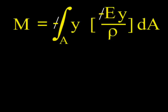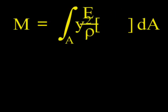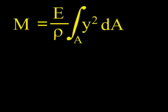The two negatives cancel out and we can change y times y to y squared. We can then bring E over ρ outside the integral sign, since they do not change from place to place over the cross section.